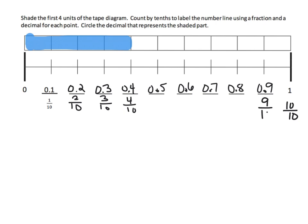We don't have 0.10—we have 1.0, because after nine tenths becomes ten tenths, which is equal to one. This is nine tenths, eight tenths, seven tenths, six tenths, and five tenths.